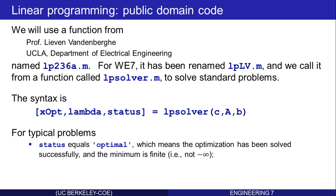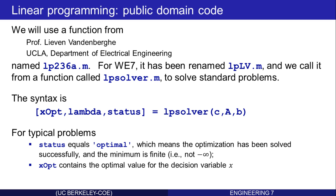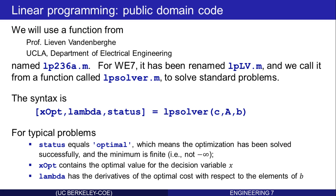For typical problems, status will be returned as the character string 'optimal'. That means that the optimization has been solved successfully and the minimum is some finite number, not negative infinity. XOP will contain the optimal value for the decision variable X as a column vector. And lambda, as I mentioned, has the derivatives of the optimal cost with respect to the elements of B.